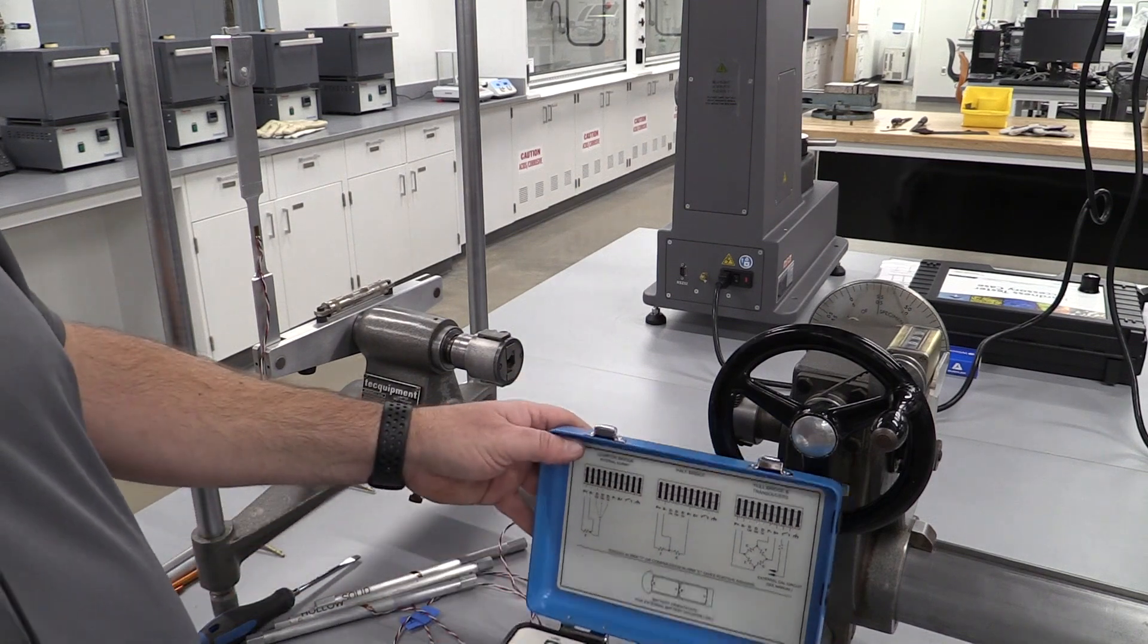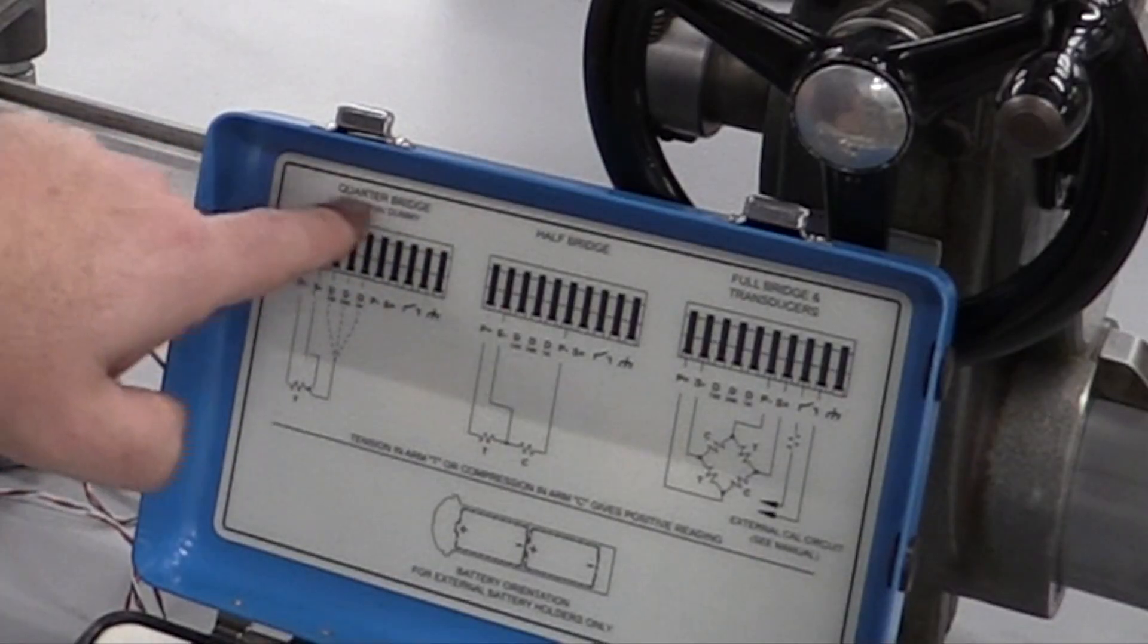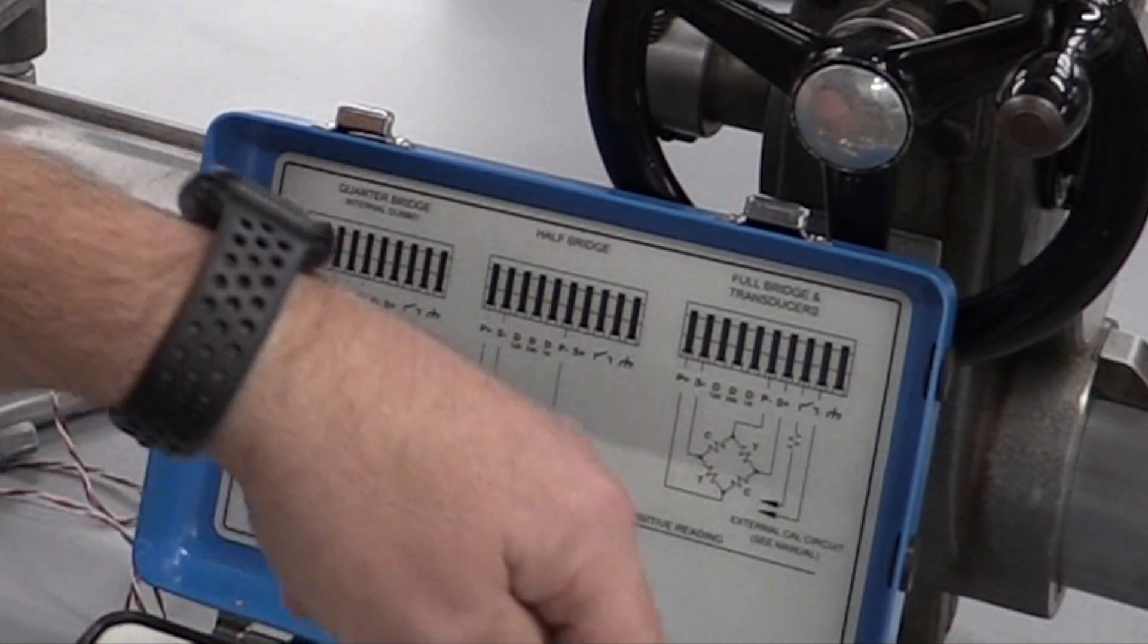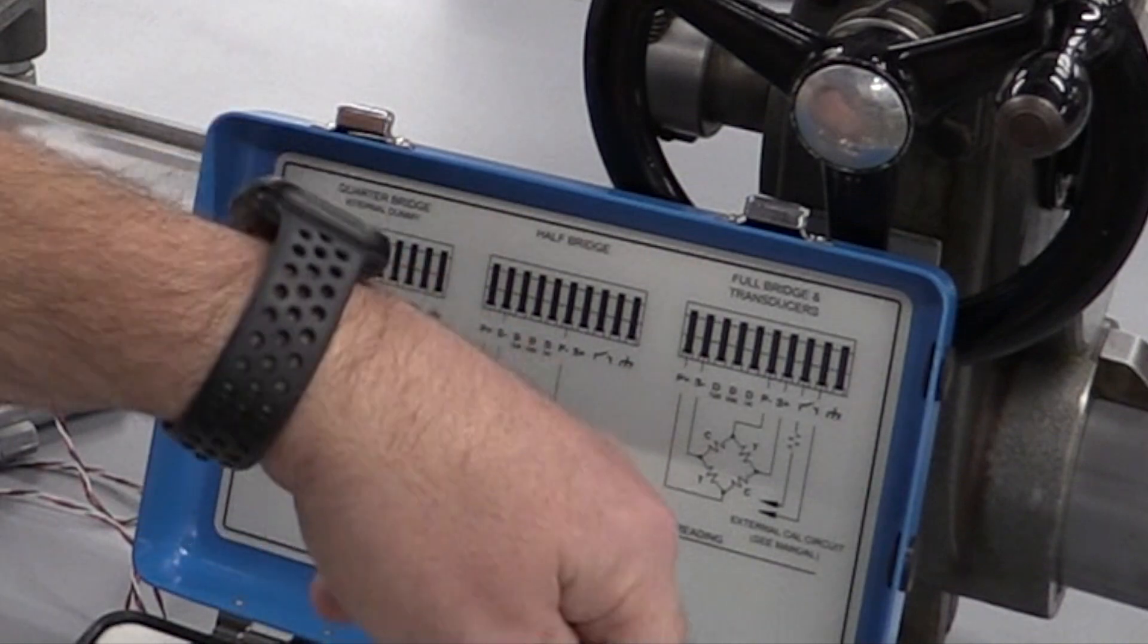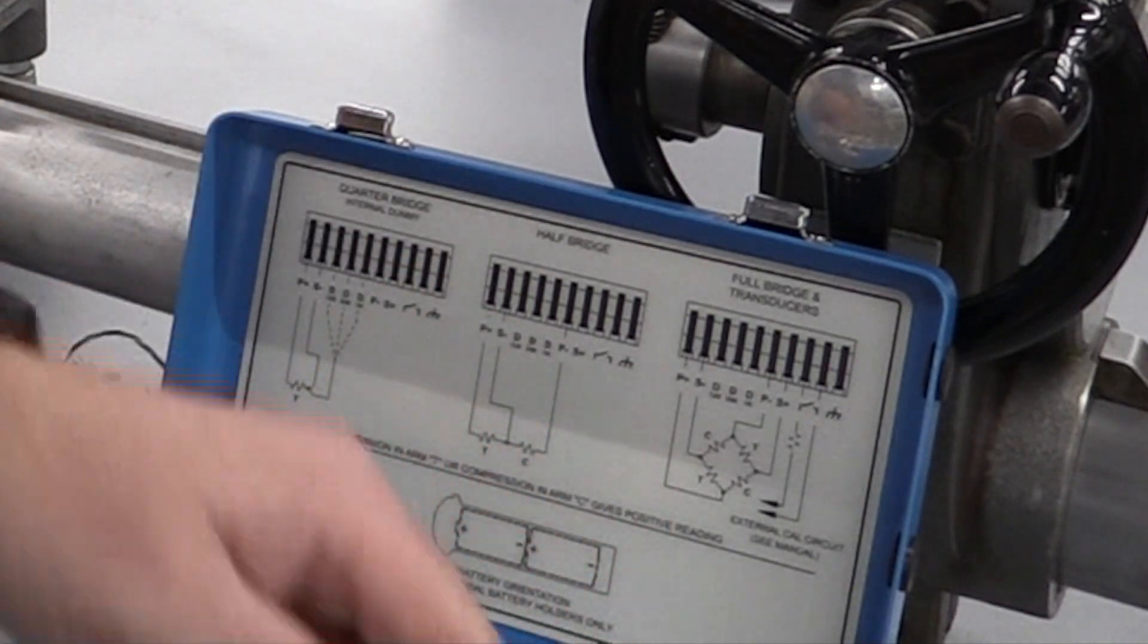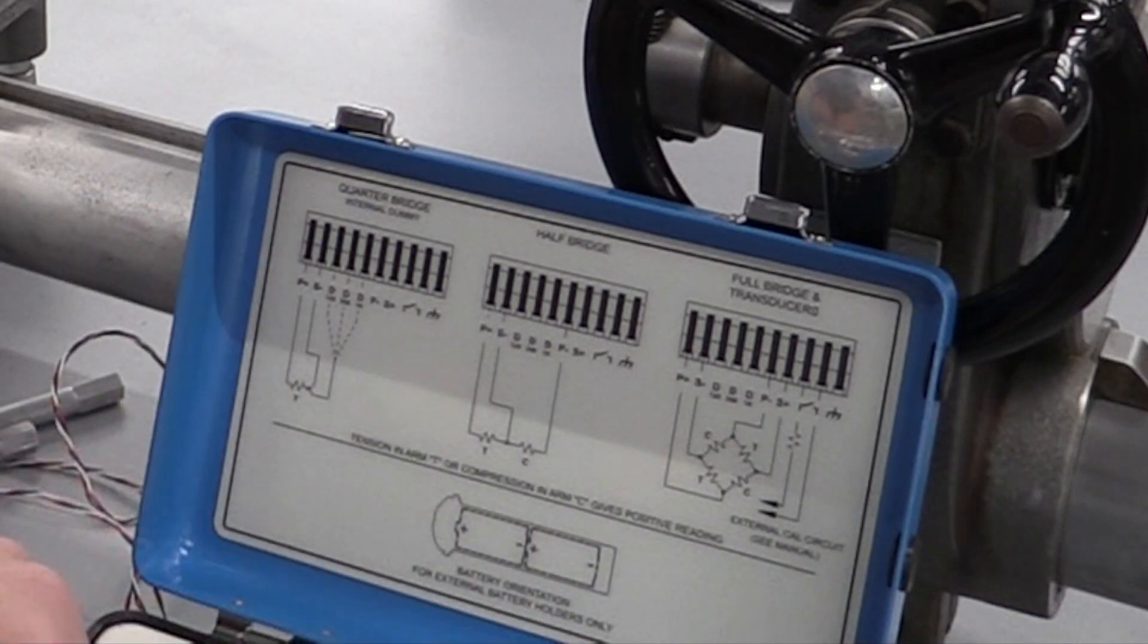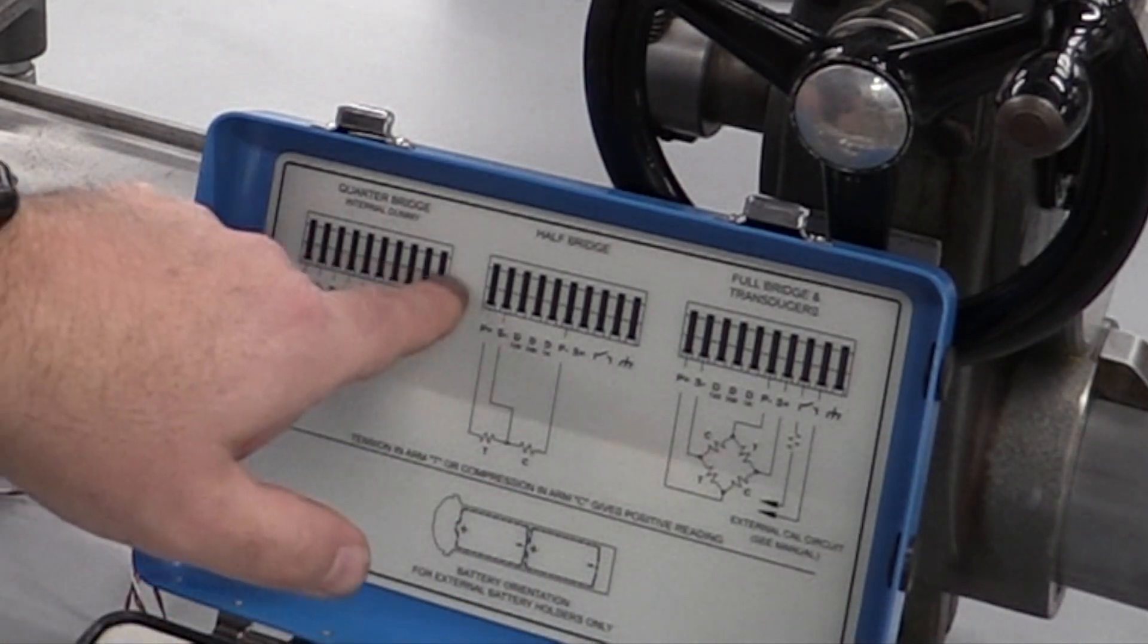Some things I want to point out about this is up here we have what we call a quarter bridge connection. This tells us how we're gonna wire to these different channels. There's one, two, three, four channels on this so we could actually run four samples. We're just running three so one, two, and three is what we're gonna hook to. And it tells us how we're gonna connect to these.